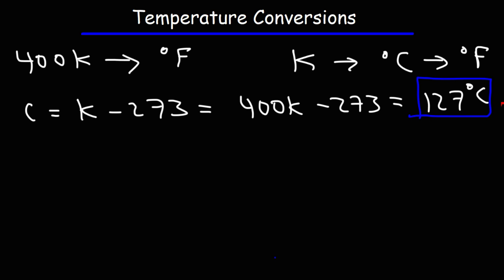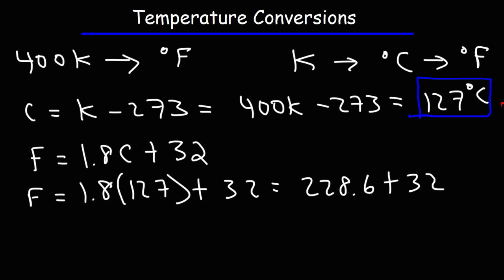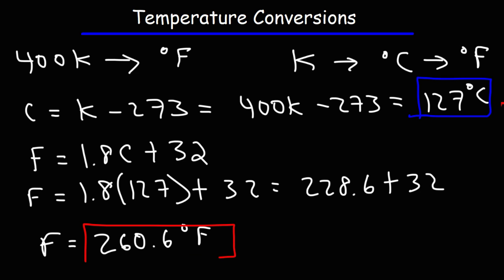Now from Celsius let's go to Fahrenheit. The Fahrenheit temperature is 1.8 times the Celsius temperature plus 32, so that's 1.8 times 127 plus 32. 1.8 times 127 is 228.6, and adding 32 gives us a Fahrenheit temperature of 260.6 degrees. So to convert from Kelvin to Fahrenheit, convert from Kelvin to Celsius first, and then from Celsius to Fahrenheit.